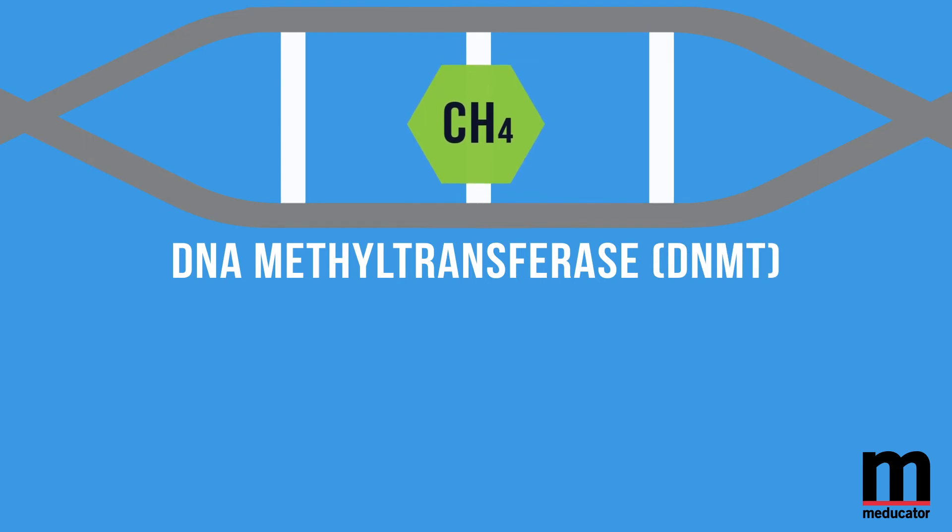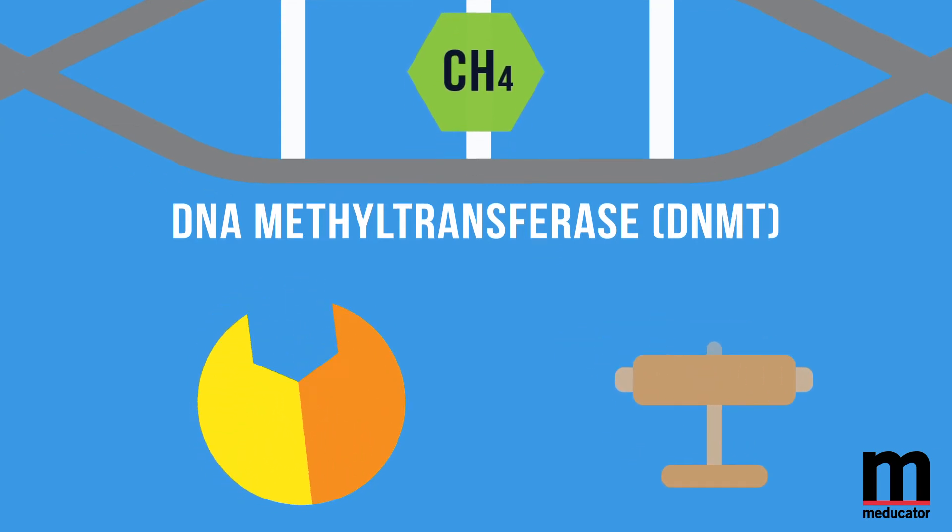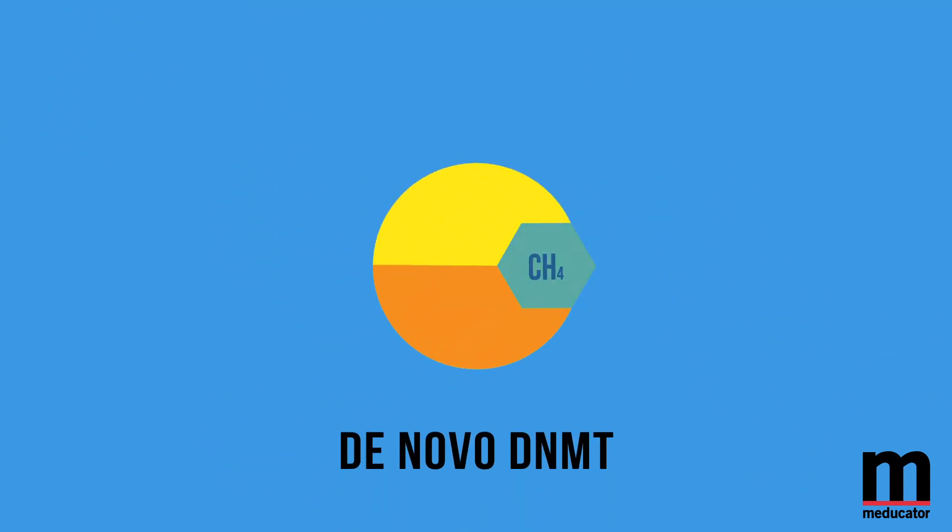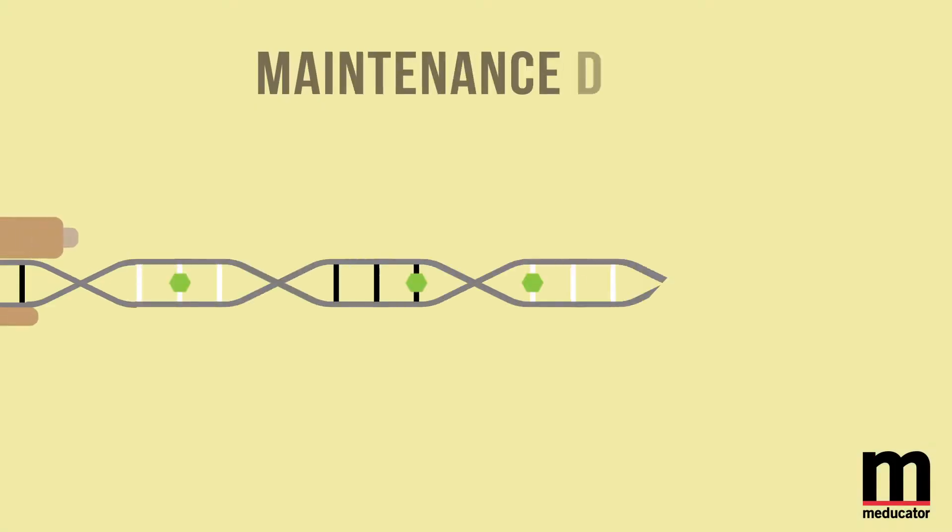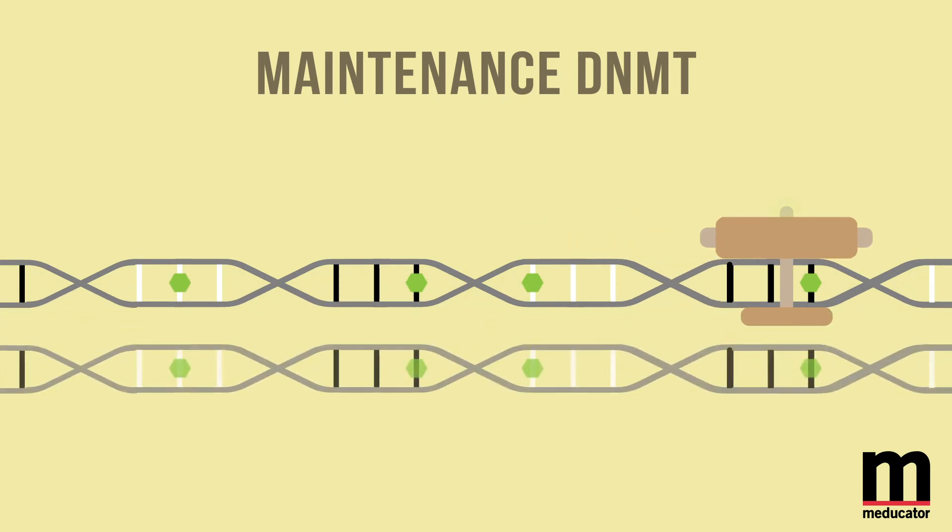De novo DNMTs act to transfer a methyl group to cytosine, which is one of the four nucleotides that make up DNA. This methyl group interferes with the binding and recruitment of proteins responsible for gene transcription. Maintenance DNMTs are responsible for maintaining the pattern of methylation in the DNA as it undergoes replication during cell division.